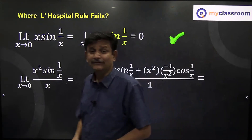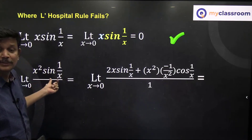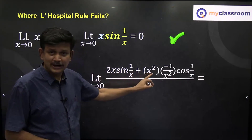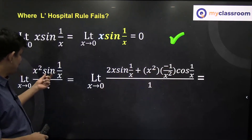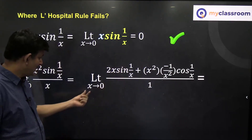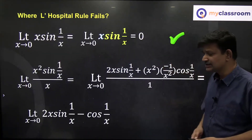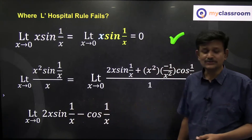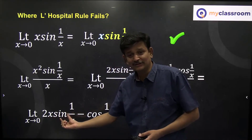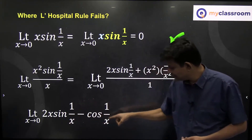Applying L'Hôpital's rule: differentiate numerator and denominator. The denominator's derivative is 1. For the numerator x²·sin(1/x), I apply the product rule: first function x² times derivative of sin(1/x) = cos(1/x)·(−1/x²), plus sin(1/x) times derivative of x² = 2x. The x² terms cancel, leaving the limit as x→0 of 2x·sin(1/x) − cos(1/x). As x→0, the term 2x·sin(1/x) → 0, since sin(1/x) is bounded.